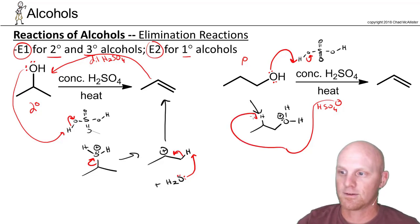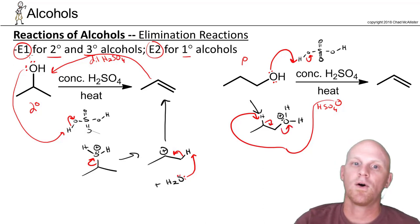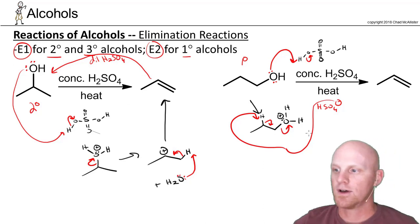We're going to come in, deprotonate, that frees up those electrons to make the pi bond, which causes the leaving group to leave all simultaneously. If you recall, the E2 mechanism is a concerted mechanism, and there is your final alkene product in this case.